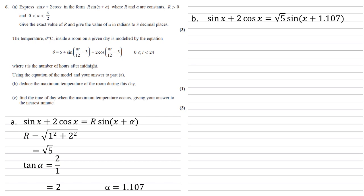Letting our x equal pi t over 12 minus 3, we can convert this into theta equals 5 plus root 5 sin(pi t over 12 minus 3 plus 1.107).